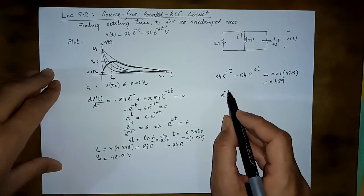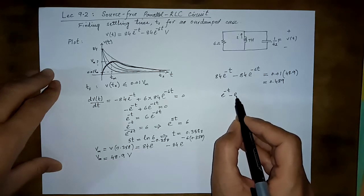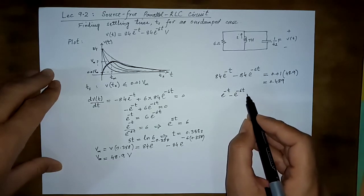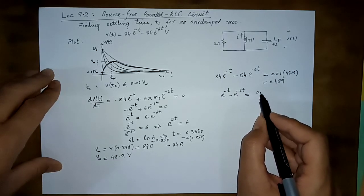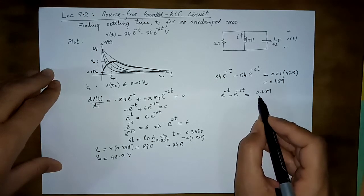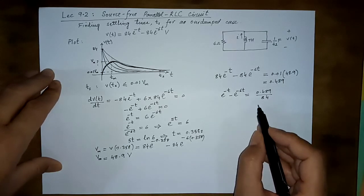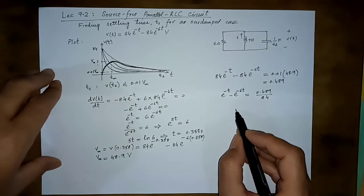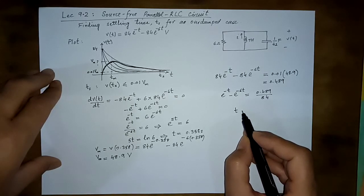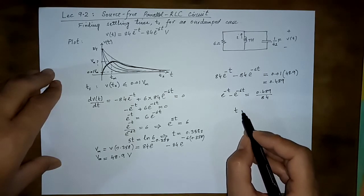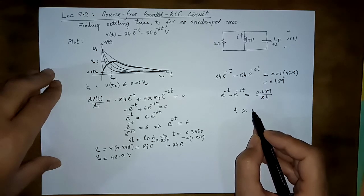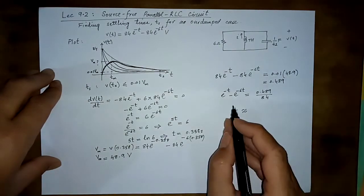So e raised power minus t minus e raised power minus 6t is equal to 0.489 over 84. If you are able to solve this equation, you will get the t, the time that would be somewhat like 5.15 seconds.